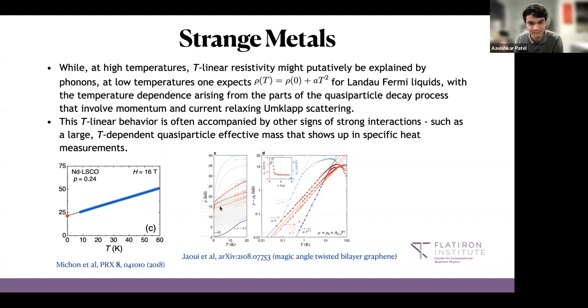There's also this very beautiful experiment from last year on magic angle twisted bilayer graphene where again the linear T-linear scaling of the temperature dependence of resistivity can extend down to temperatures that are like 40 millikelvin where there are no phonons. This T-linear behavior in the resistivity is often accompanied by other signs of strong interactions like T log T specific heat, which implies a strong temperature dependent renormalization of the quasiparticle effective mass.